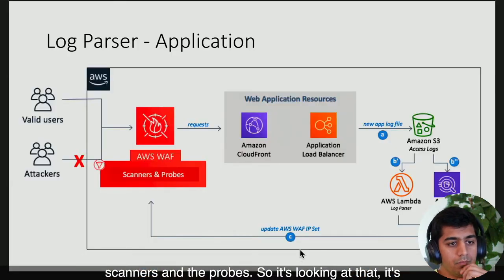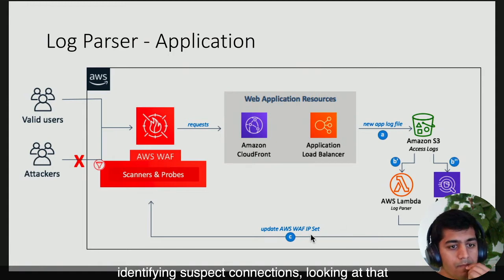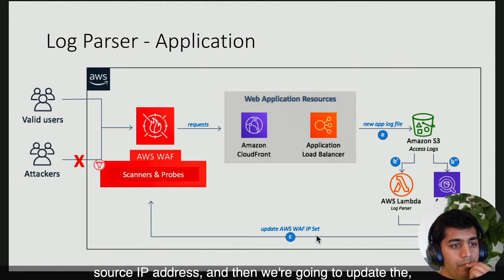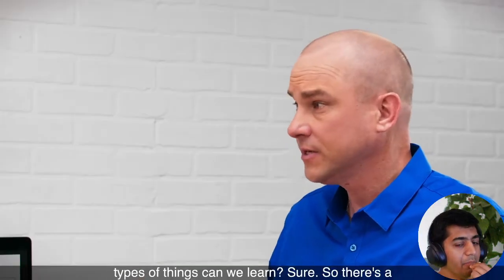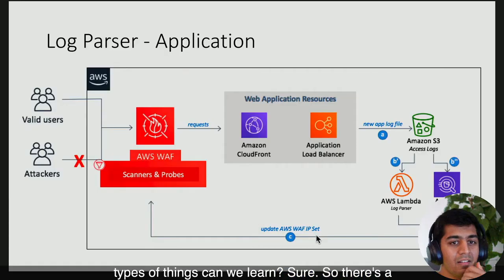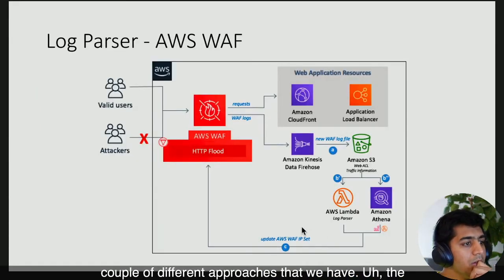So this is actually the self-learning from our own logs, focusing on scanners and probes. It's looking at those, identifying suspect connections, looking at that source IP address, and then updating that particular rule set with those IPs. What other types of things can we learn?